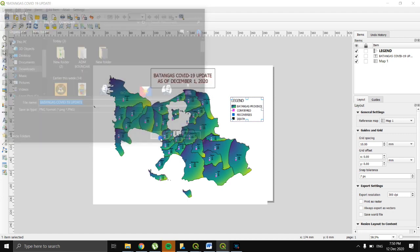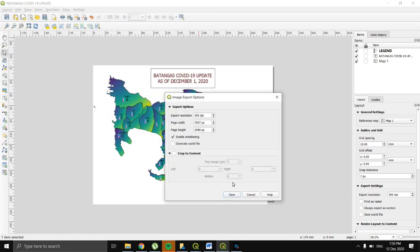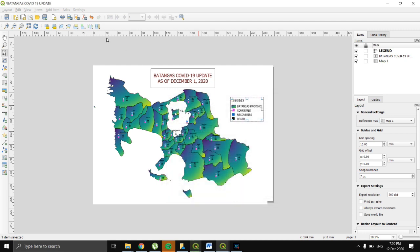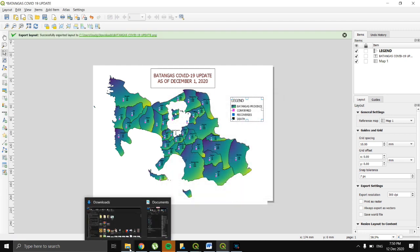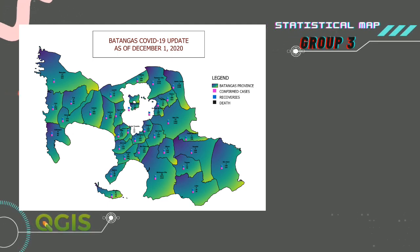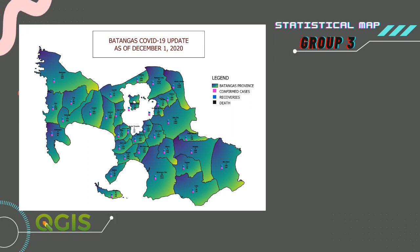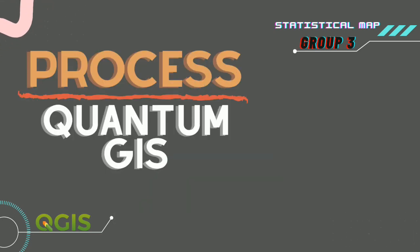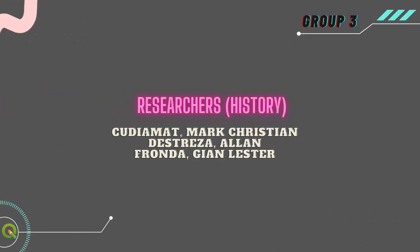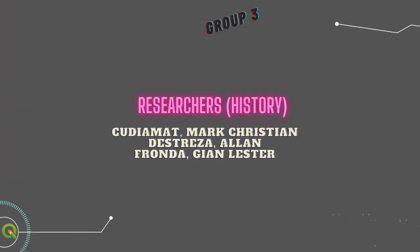We're done. That's the end of making a statistical map by using QGIS. Thank you for your time and God Bless.